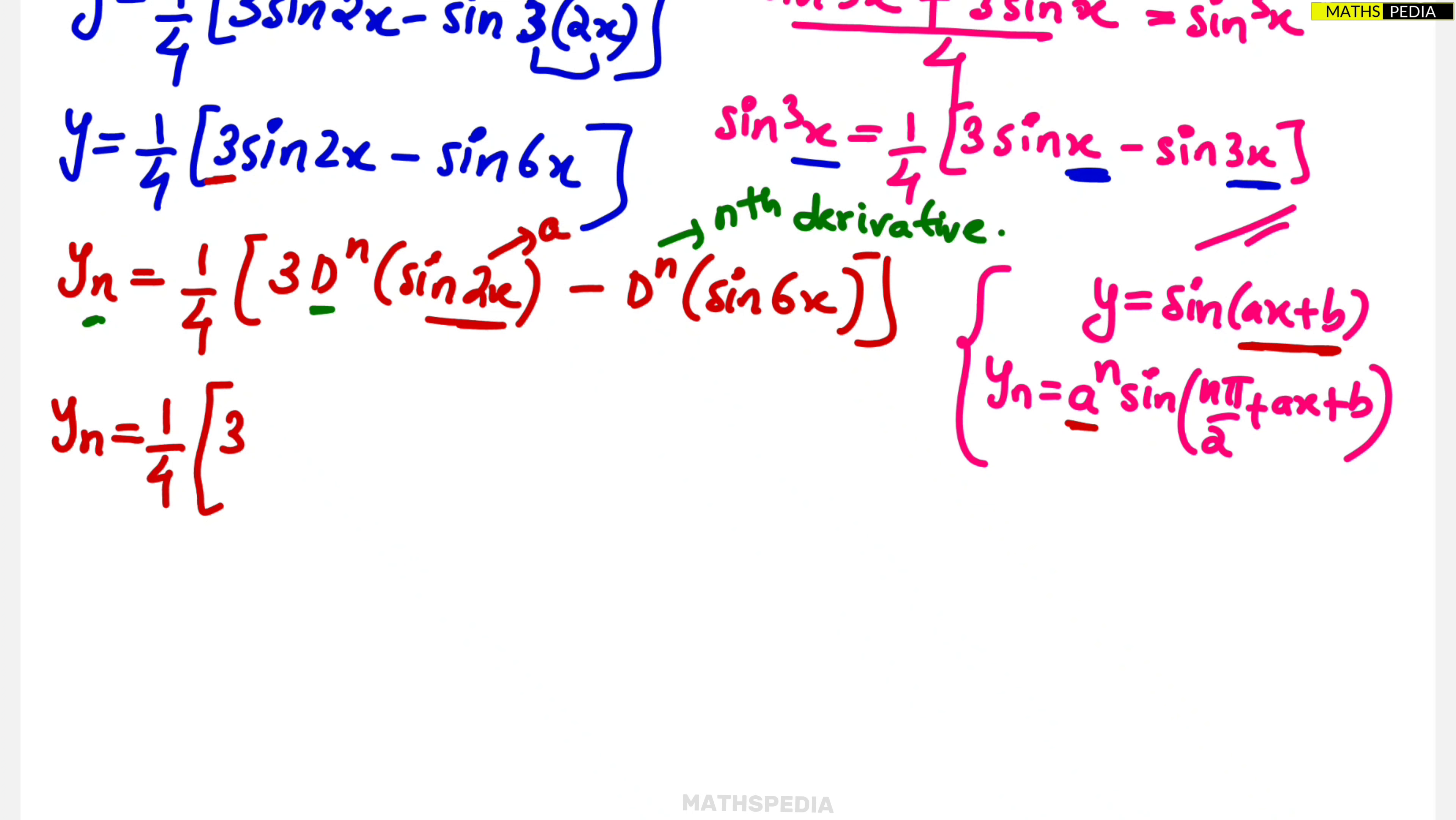Here it is 2, so it will be 2 power n into sine n pi by 2 plus ax plus b. So ax term is 2x plus b. If you want you can write it as plus 0, otherwise leave it.